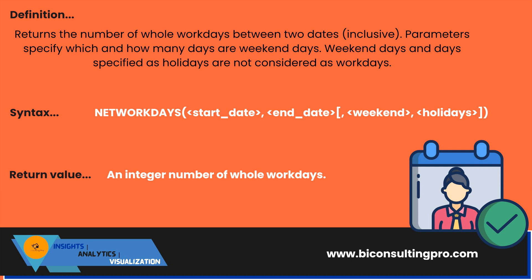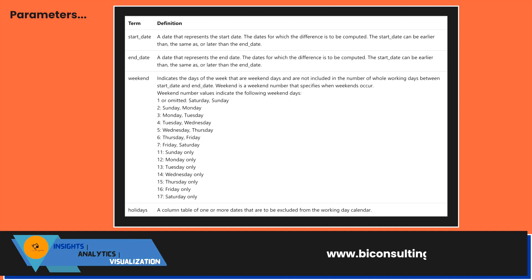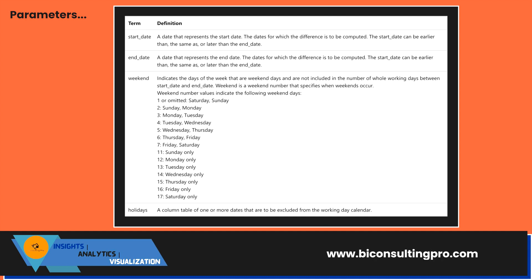The first parameter is your start date — a date representing where the calculation begins. The end date represents the end of the period. For weekends, different countries have different definitions; by default, value 1 represents Saturday and Sunday, while in some countries the weekend is Friday and Saturday. You can use the corresponding numbers in the weekend parameter. Holidays is an optional column or table of one or more dates to be excluded from the working days calendar.